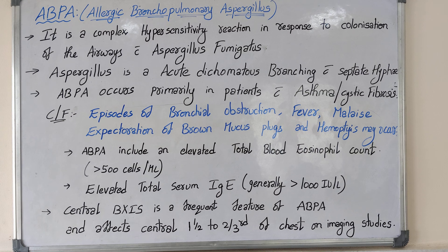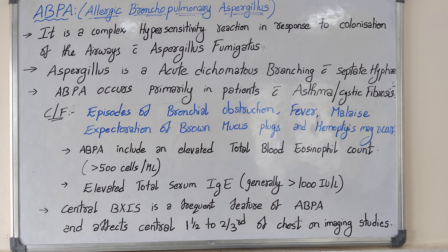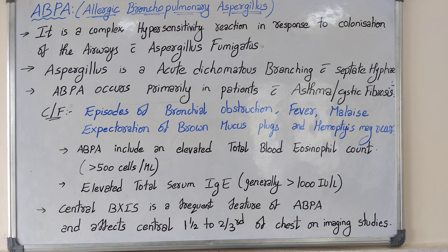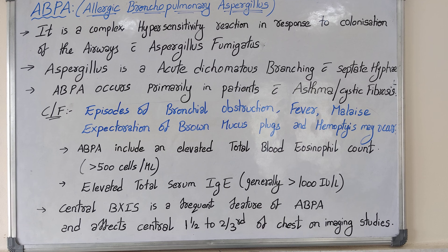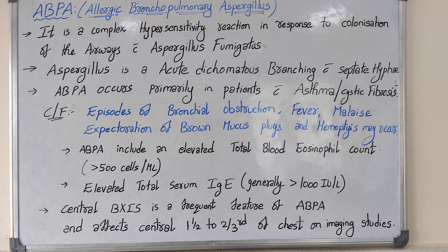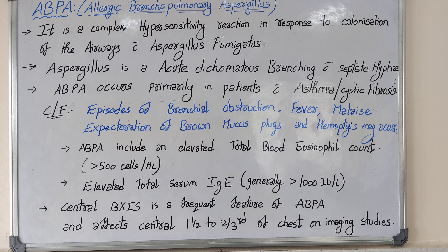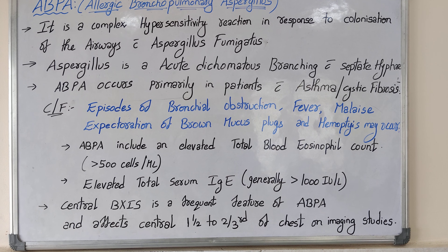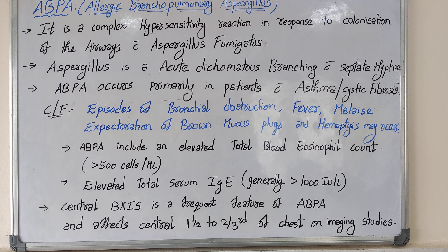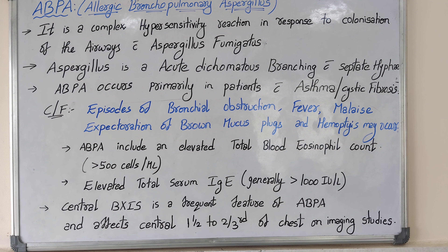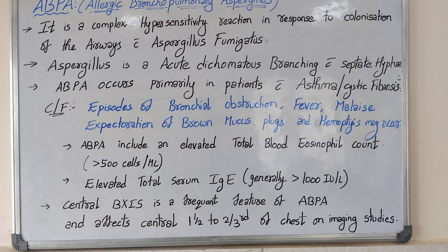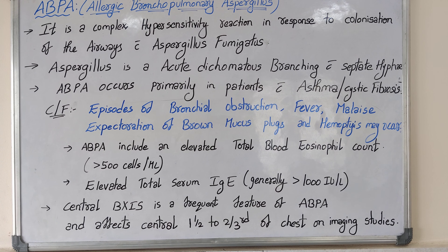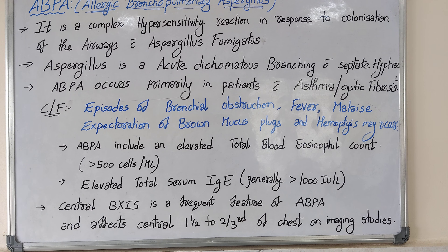cells per microlitre, and total IgE will be elevated, generally more than 1000 international units per litre. Central bronchiectasis is a frequent feature of ABPA — it affects the central half to two-thirds of the chest on imaging studies.